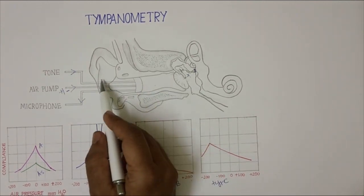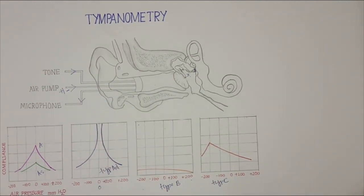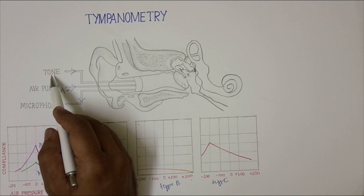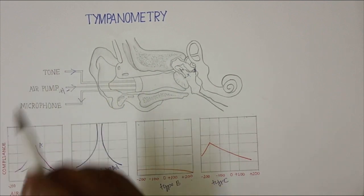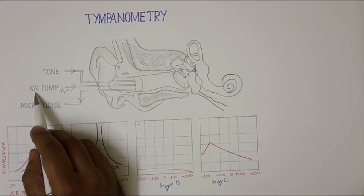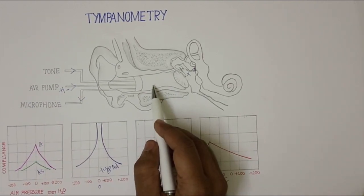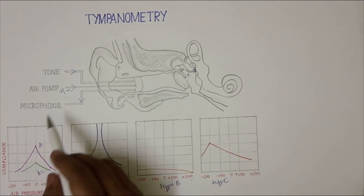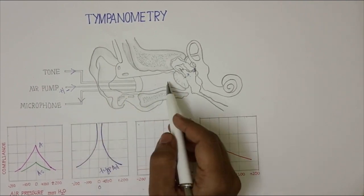This is a tympanometry probe, which is air-sealed and kept in the external otric canal. It has three channels. One is for the tone, to give a tone of 220 hertz. Another one is to pump air into the external otric canal, either to increase or decrease the air pressure. The third channel is to pick up the sound which is reflected back.